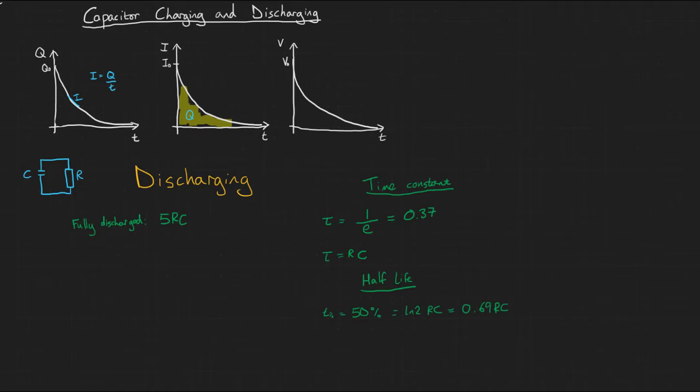But why 5 time constants? Well, 0.37 to the power of 5 multiplied by RC is equal to 0.0069 RC. So after 5 time constants, only 0.69% of the charge is remaining. So it is, for all practical purposes, empty.